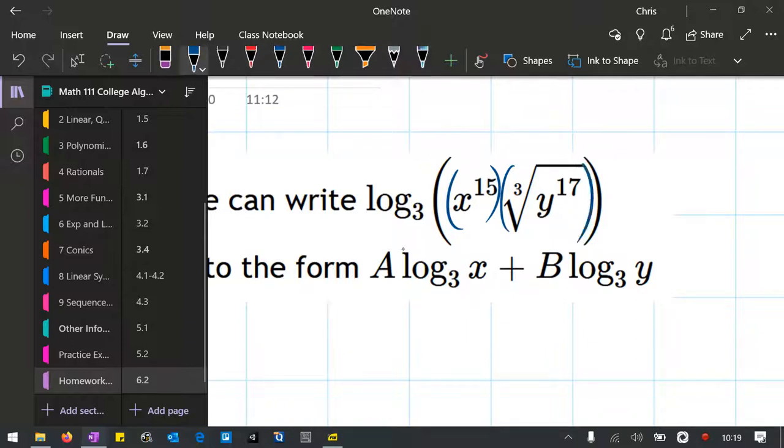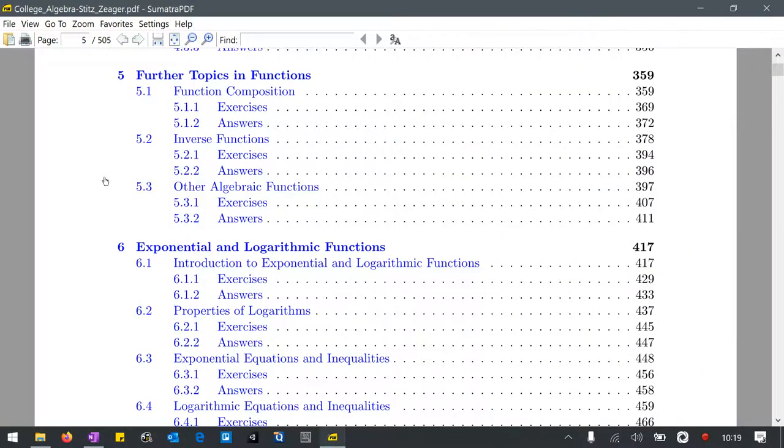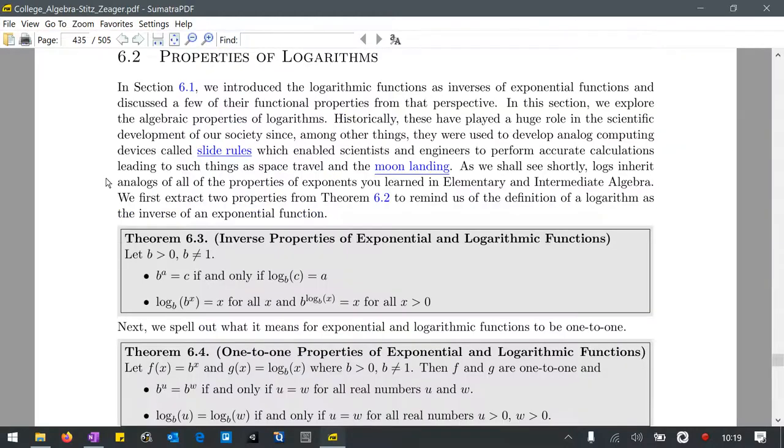So what we have is a product and we have powers. So if you're not sure where all the properties are, what we're going to do is look in the textbook. So we're going to go, this comes from 6.2, so we're going to go right into 6.2.